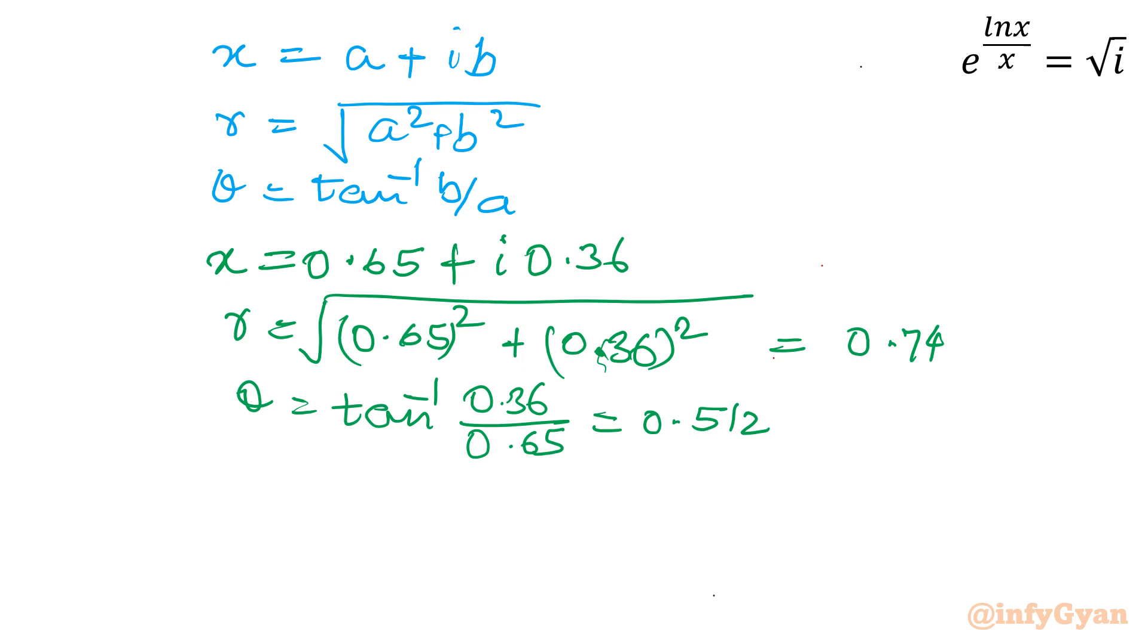So let me write our answer in polar form also. So x is equal to 0.74 e raised to the power i theta. So i is i and theta is 0.512. Let me write in this. So this is again our answer in polar form.